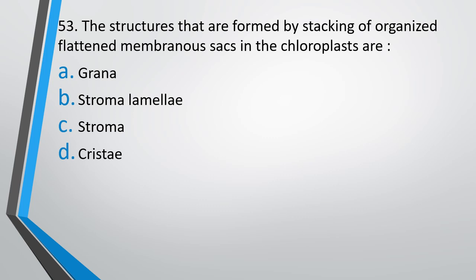Question number 53. The structures that are formed by stacking of organized flattened membranous sacs in the chloroplast is: grana, stromal lamella, stroma, or cristae? The correct answer is option A, grana.